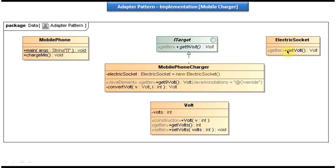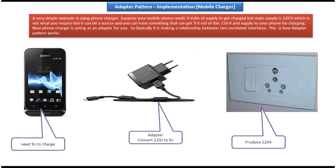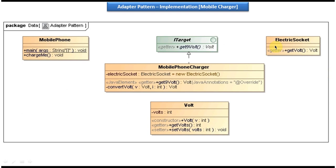This is the class diagram of the scenario we just saw. On the right side we have the electric socket, which produces 220 volts. Corresponding to this electric socket, I created an ElectricSocket class which has a getVolt method that returns the volt. This getVolt method will return 120 volts to the caller.